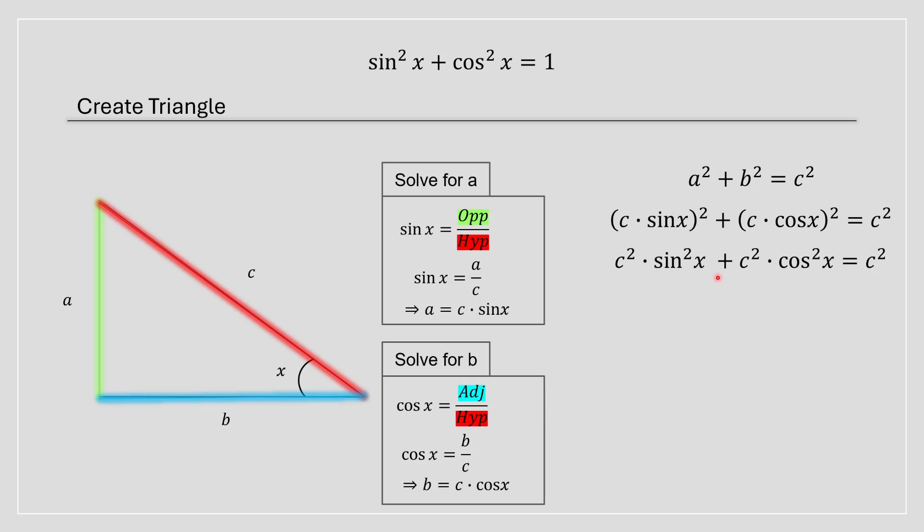And what you're going to notice is there's a c squared term here and a c squared term over there. So we can factor out c squared. On the left-hand side and the right-hand side respectively, they have a c squared, so they both cancel out. What you're really left with is sin squared x plus cos squared x equals one. And this is how you prove the most famous trig identity.